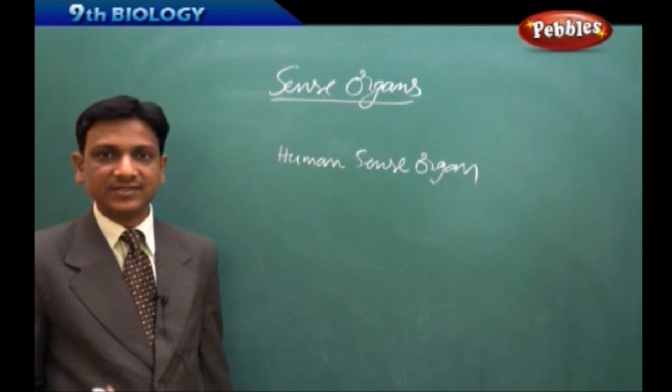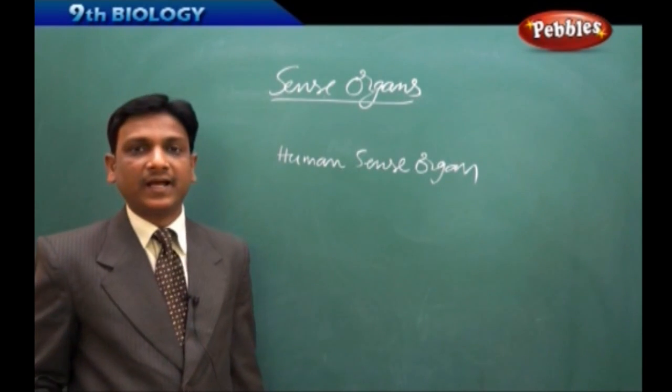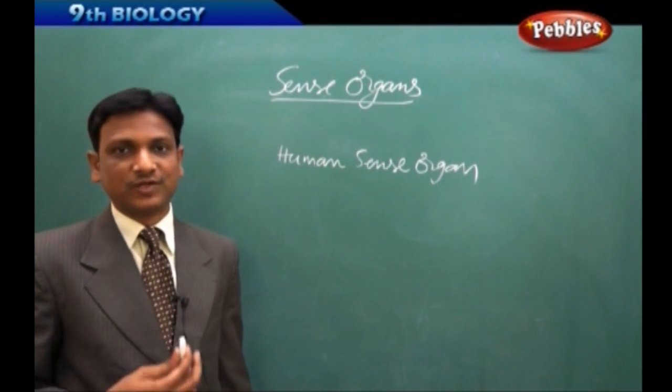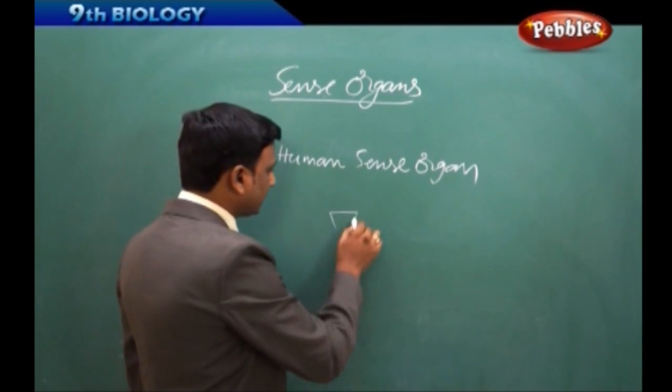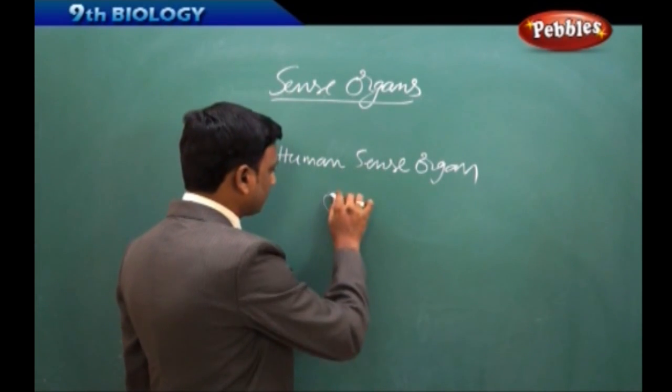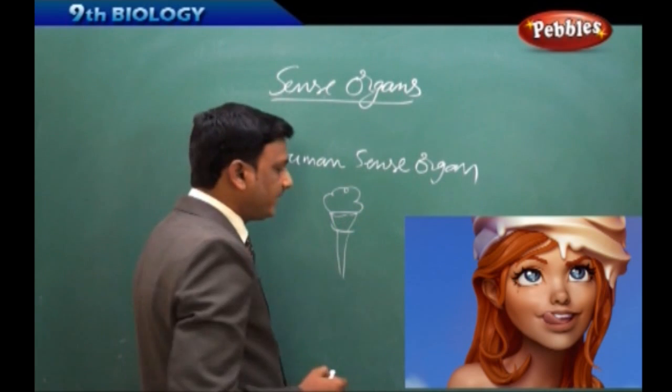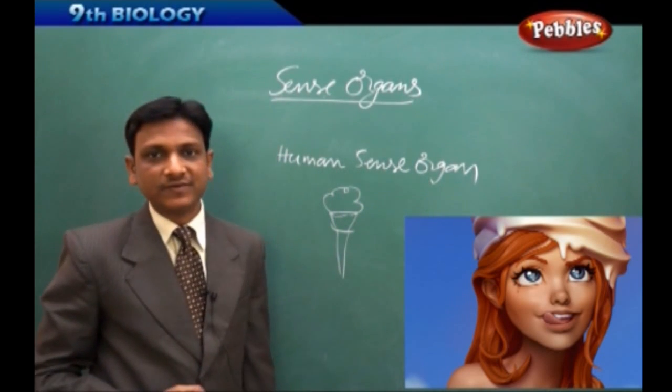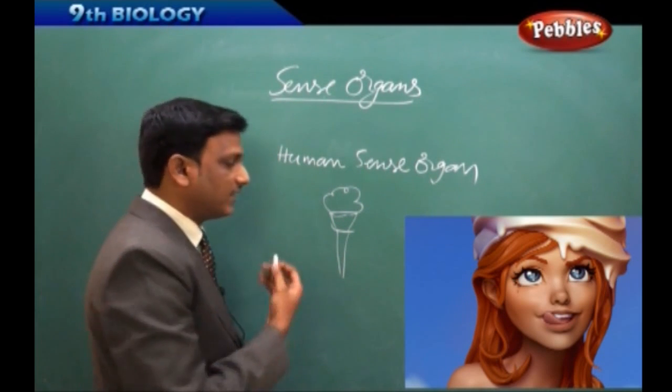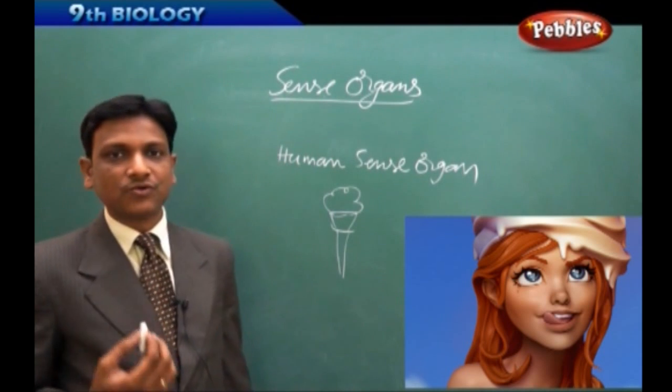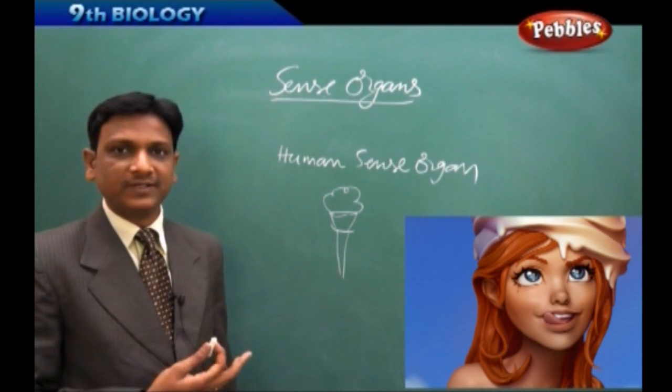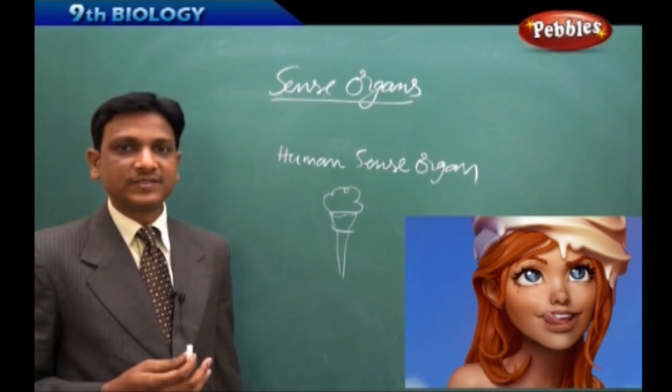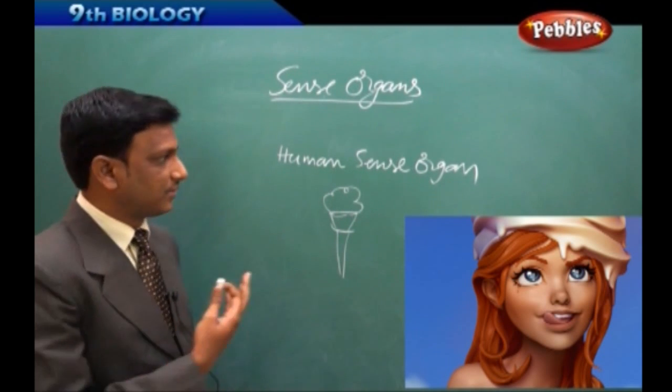This is spicy, this is salty, this is sour. And you can appreciate different flavors also. Just if I say ice cream, immediately in your mind different flavors will come. This ice cream can be vanilla flavor, butterscotch, chocolate flavor. So there are different flavors—strawberry flavor. So the different flavors also you will be able to appreciate. That is because of the sense organs.